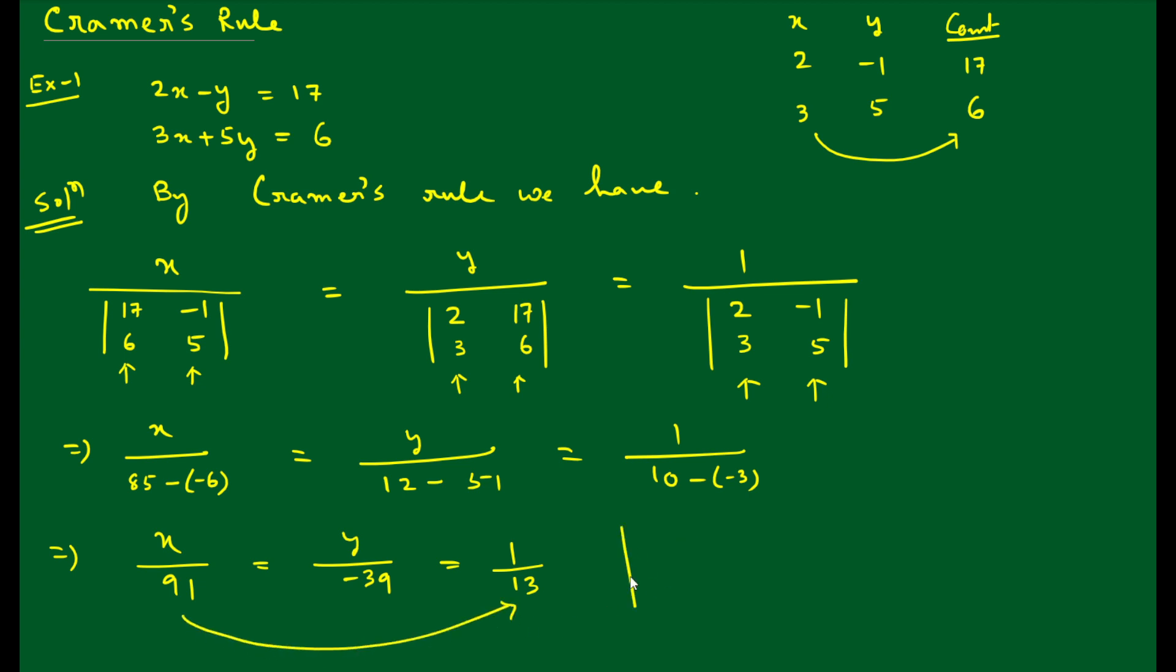Now how to find the value of x and y? We compare these two. First, x by 91 equals 1 by 13. Cross multiply: x equals 91 by 13 which is 7. Then y divided by -39 equals 1 by 13, so y equals -3. Therefore x equals 7 and y equals -3.